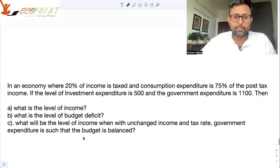Look at this question. Please read this, pause the video, and then come back. In an economy where 20% of income is taxed and consumption expenditure is 75% of the post-tax income, if the level of investment expenditure is 500 and the government expenditure is 1100, then what is the level of income?